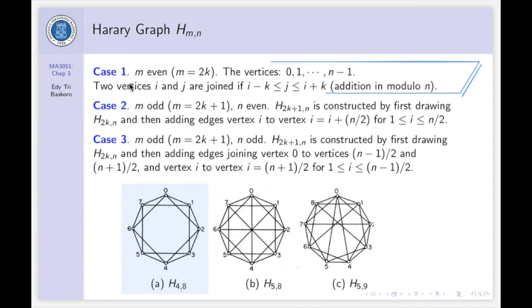Case 1, if M is even, M equals 2K, then two vertices I and J are joined if the difference between I and J is at most K in modulo N. This is the example, H_4,8. That means this graph has 8 vertices from 0 up to 7. And then, I and J, two numbers are joined if the difference is at most 2.